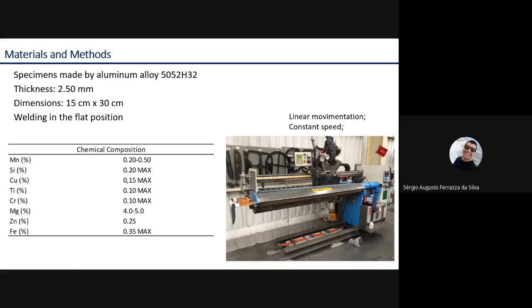In the table, we can see the chemical composition of the aluminum alloy. In the picture, we can see the machine used to make the welding with linear movement and constant speed.